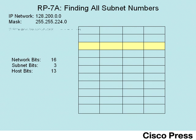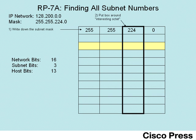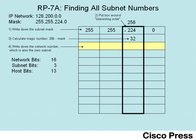In process RP7A, the first four steps occur only once, and step five is then repeated. At step one, we simply copy down the mask into the top row of a table. At step two, we put a box around the interesting octet — that's the octet in which the mask is not a zero nor a 255. At step three, you calculate the magic number: 256 minus the value of the mask in the interesting octet — in this case 256 minus 224, or 32. At step four, you write down the Class B network number, which is also the exact same value as the zero subnet.